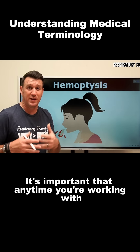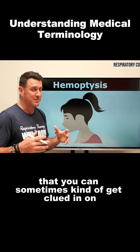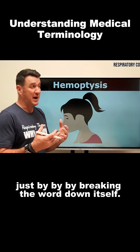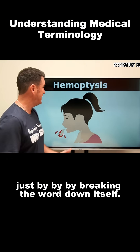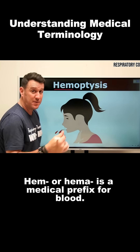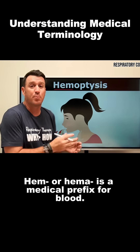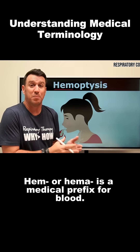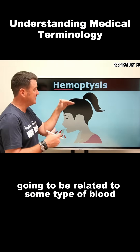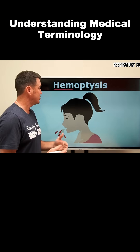It's important that anytime you're working with medical terminology, you can sometimes get an idea of what the word is talking about just by breaking the word down itself. We start here with H-E-M. H-E-M or H-E-M-A is a medical prefix for blood, so we know anything starting with H-E-M is going to be related to some type of blood terminology.